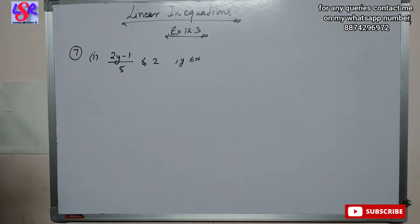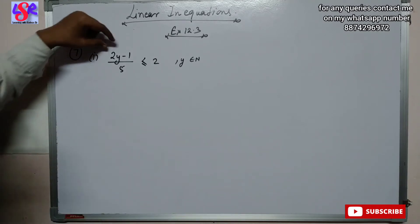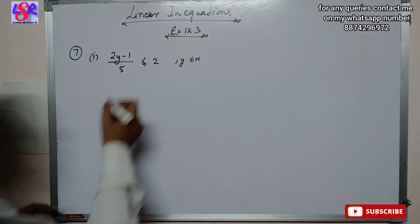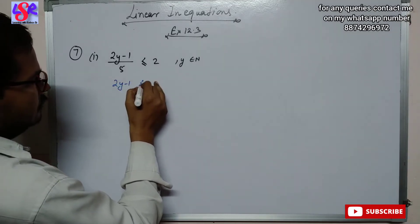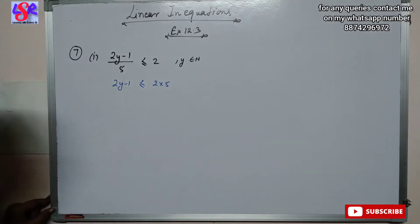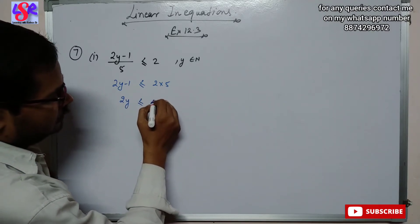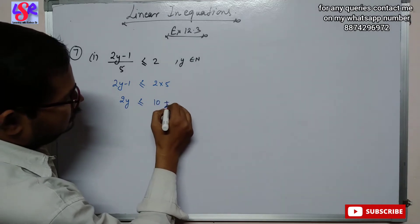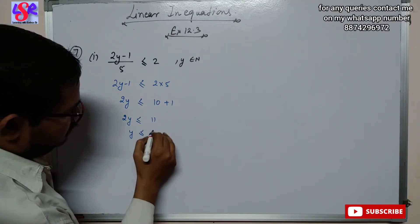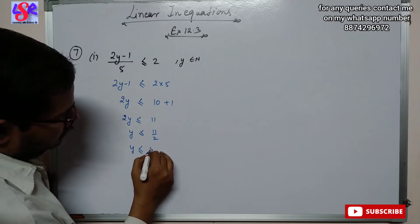Now we will move to question 7, first part. The level is increased a bit. Here (2y minus 1) upon 5 is less than or equal to 2, where y is the element of natural number. We transpose 5 and multiply: 2y minus 1 is less than or equal to 10. Then 2y is less than or equal to 10 plus 1, giving 2y less than or equal to 11. So y is less than or equal to 11 upon 2, which is 5 and 1/2.